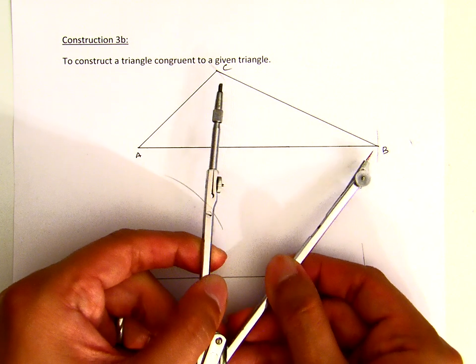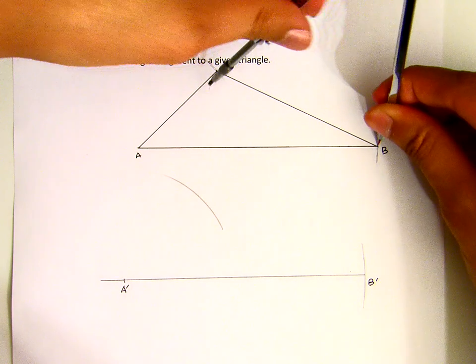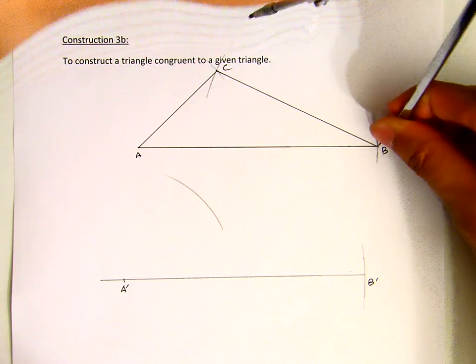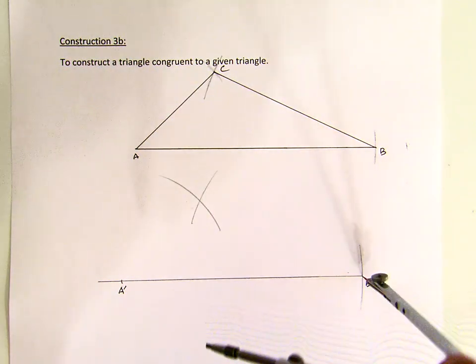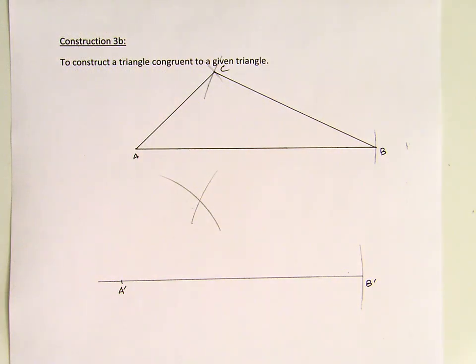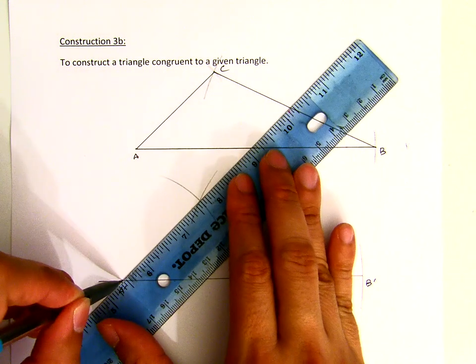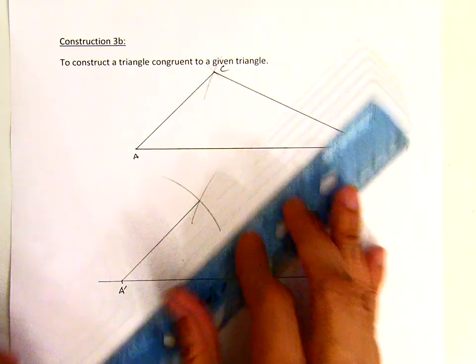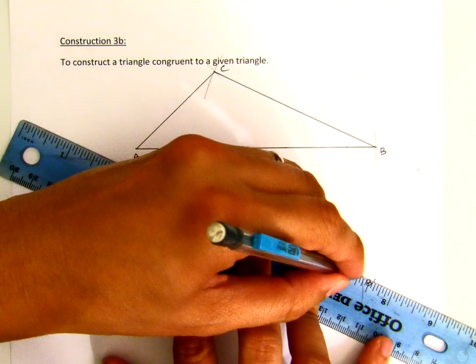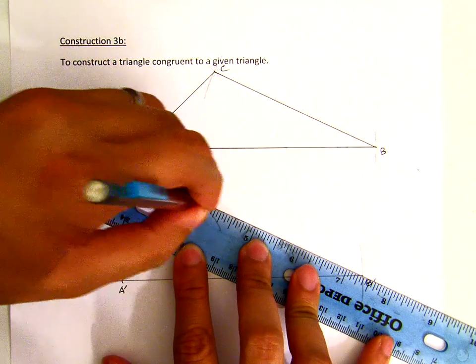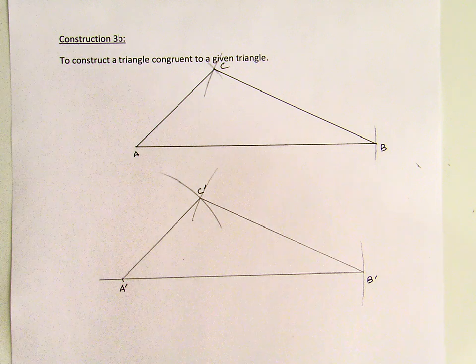Now, I will now do the swipe from B to C. From B to C. Oh, that's precise again. Now, from B prime, I swipe to this direction. The intersection of those two arcs will be the copy of my C. Okay? Pull the line. That is my C prime.